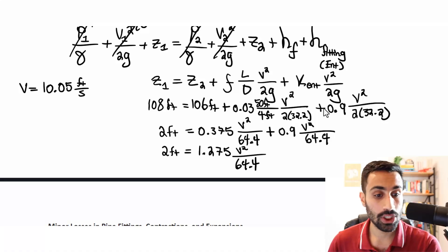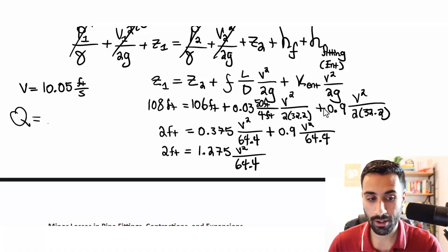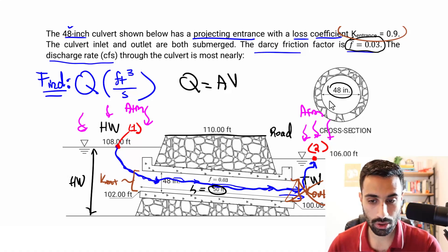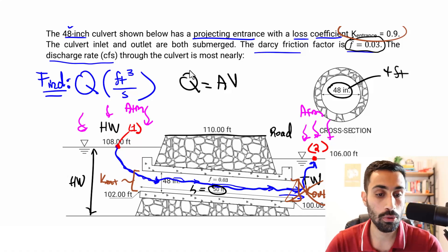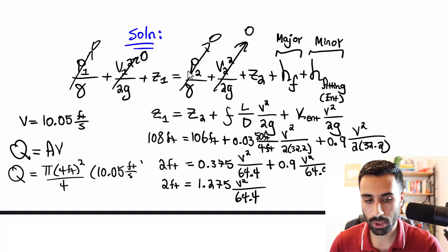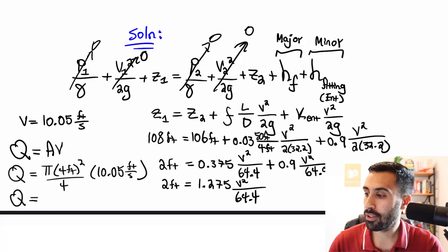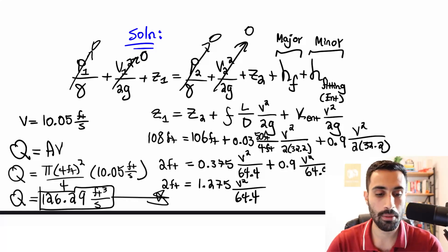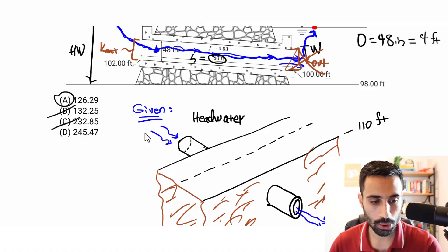To finish, the flow rate Q = A × V. The area for the circular pipe is π × D²/4 = π × (4 ft)²/4. Multiply by the velocity of 10.05 ft/s, keeping units in feet for cubic feet per second. We get a value close to 126.29 CFS — cubic feet per second. That is our answer. Going back to the multiple choice options, we pick answer A.